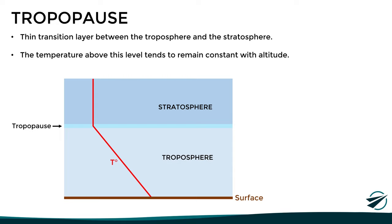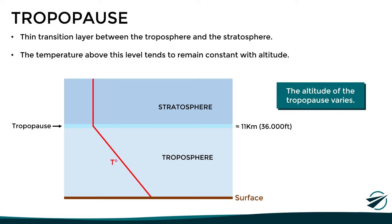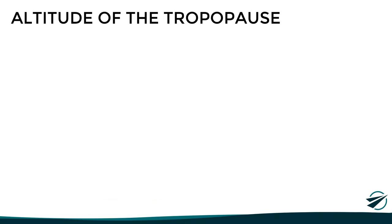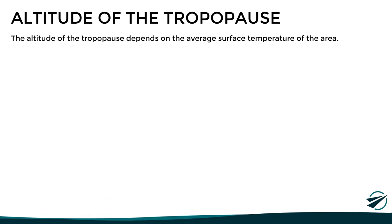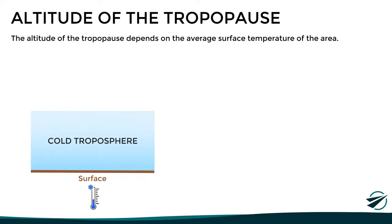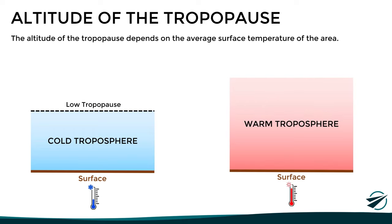As we said previously, the average upper limit of the troposphere is around 11 km or 36,000 feet. However, since in reality the extension of the troposphere varies, the altitude of the tropopause also varies. In fact, the altitude of the tropopause depends mainly on the average surface temperature of the area. If there is a low surface temperature, the air above it will tend to shrink, and therefore we will have a lower tropopause. On the other hand, if there is a high surface temperature, the air above it will tend to expand, and therefore we will have a much higher tropopause.